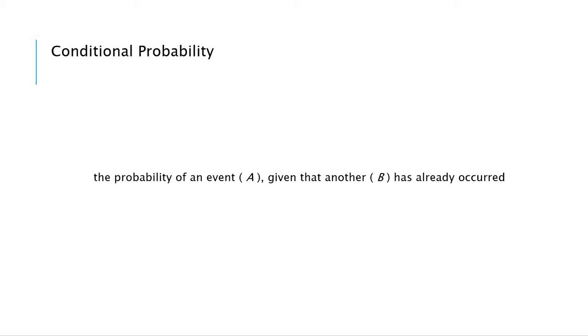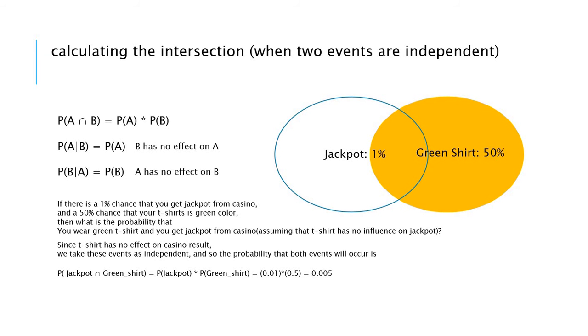The conditional probability, which is the probability of an event A given that another event B has already occurred. Here is an example.